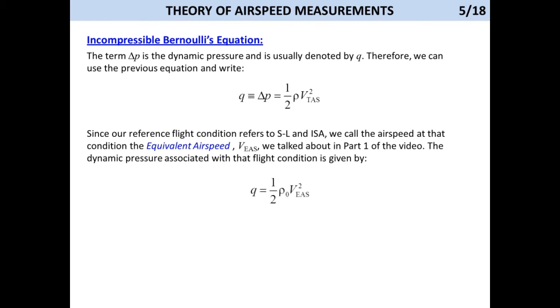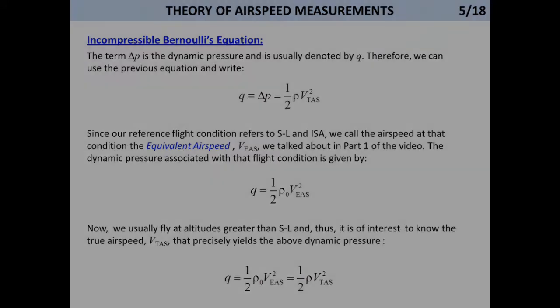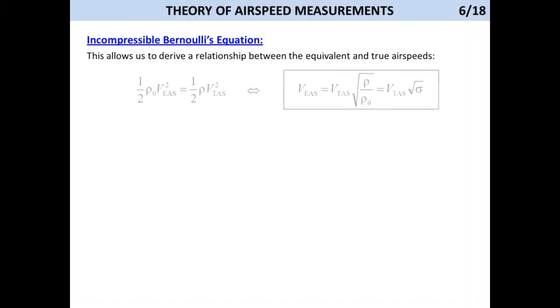Now, we usually fly at altitudes greater than sea level, and thus it is of interest to know the true airspeed that precisely yields the above dynamic pressure. This is of interest because that airspeed is used to determine how long it will take us to fly from A to B. And we write it as follows. This allows us to derive the following relationship between the equivalent and true airspeed, where sigma is the density ratio.